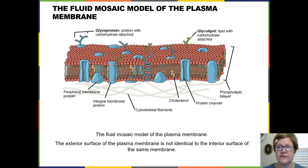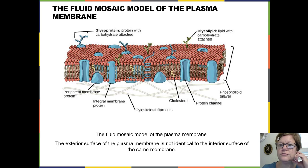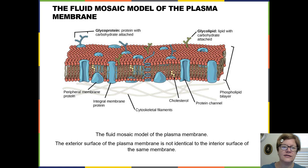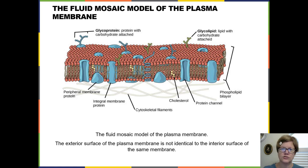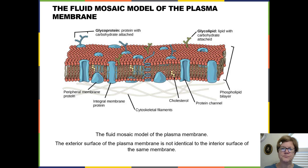This slide shows those main components in what we call the fluid mosaic model. Before we had really good electron microscopes, there were different hypotheses about how membrane structure was arranged. With research and good electron micrographs, we were able to come up with what we believe is the correct model — the fluid mosaic model.